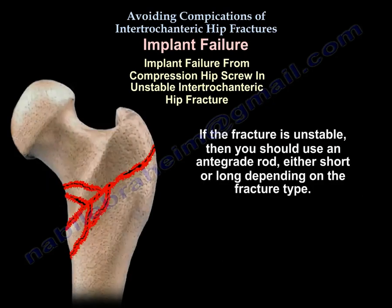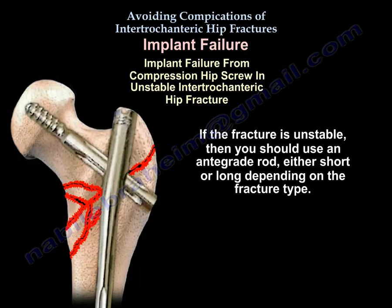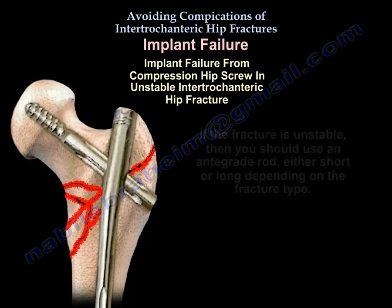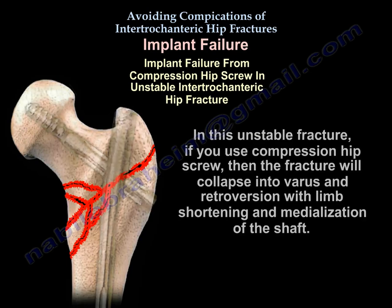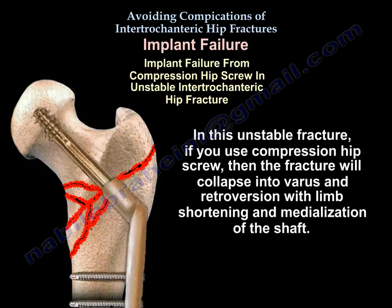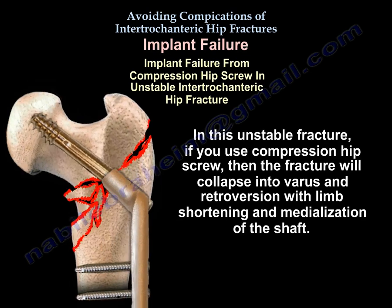If the fracture is unstable, you should use an intramedullary rod — short or long depending on the fracture type. In this unstable fracture, if you use a compression hip screw, the fracture will collapse into varus and retroversion with limb shortening and medialization of the shaft.